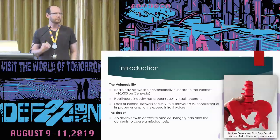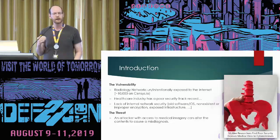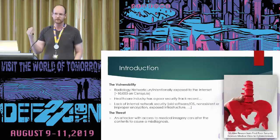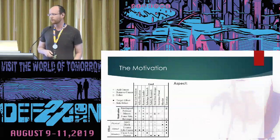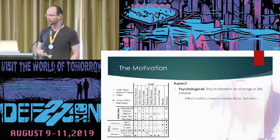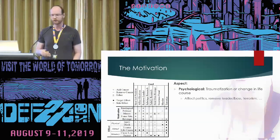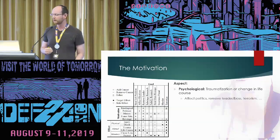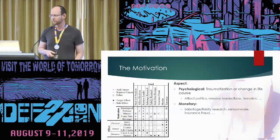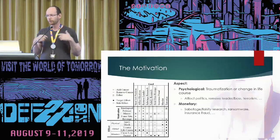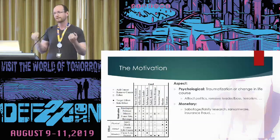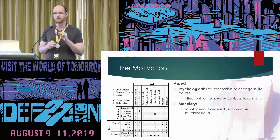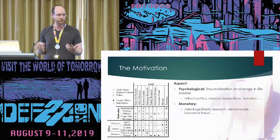What's the threat? We're considering not just somebody stealing your data, but an attacker actually changing that data — manipulating scans to affect your diagnosis. Why would an attacker want to do that? The psychological aspect: causing traumatization or life change, such as making a political leader step down. The monetary aspect: sabotage, falsifying evidence, ransomware, or more likely insurance fraud — injecting a small fracture or aneurysm and claiming life quality insurance for millions of dollars.